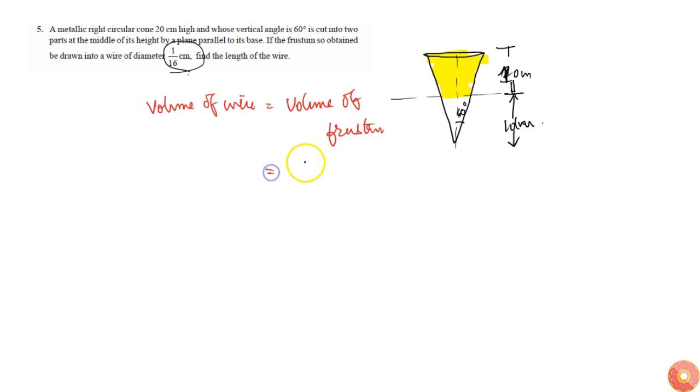Volume of frustum we know is equal to 1/3 times pi times (r1² + r2² + r1·r2) times height h. So height h is simply 10 centimeters.